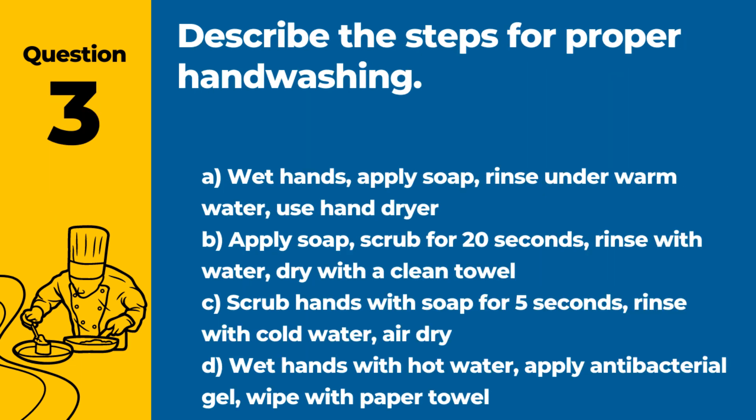Question 3. Describe the steps for proper hand washing. Answer: B. Apply soap, scrub for 20 seconds, rinse with water, dry with a clean towel. Proper hand washing technique involves wetting hands, applying soap, scrubbing for at least 20 seconds, rinsing thoroughly, and drying with a clean towel.